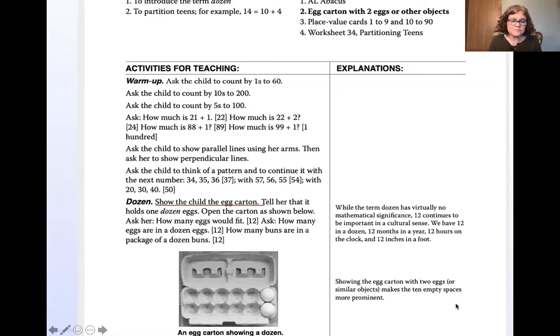For the lesson segment, where you are having your child do the activities, very straightforward. Look at this. You're teaching your child the dozen, right? Okay, so here it says, show the child the egg carton. Here, child, here's my egg carton. Tell her that it holds a dozen eggs. McKenna, this holds a dozen eggs. Open the carton as shown. So now I'm going to open up the carton. See how easy that is? There is no guessing. It's very, very straightforward.